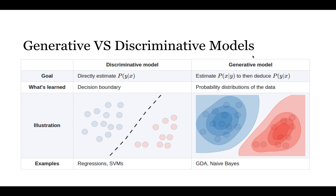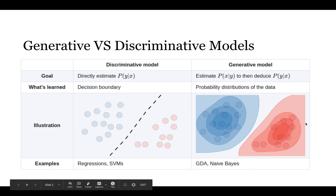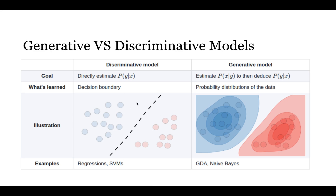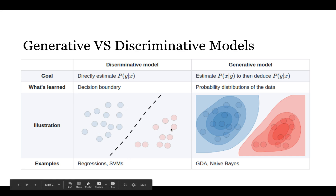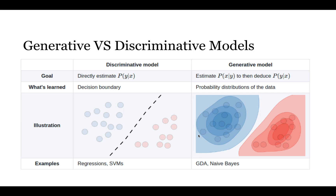The generative model learns the probability distribution of the data. Looking at the example here, we are drawing the distribution of the data — this is one class and this is the second class. In the discriminative model, we are drawing the decision boundary and classifying: this side of the feature belongs to this class, the other side belongs to another class. That is the visualization of discriminative and generative models.